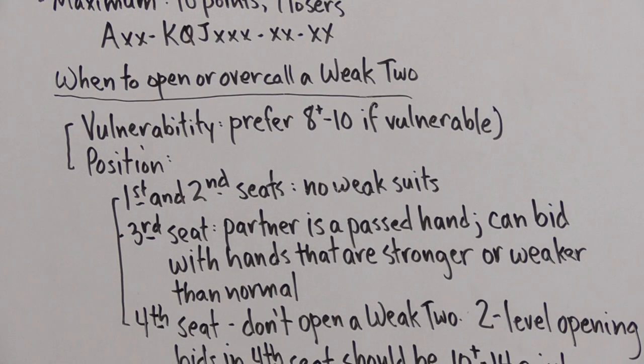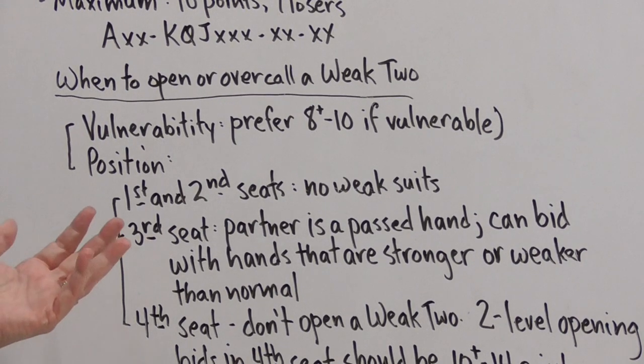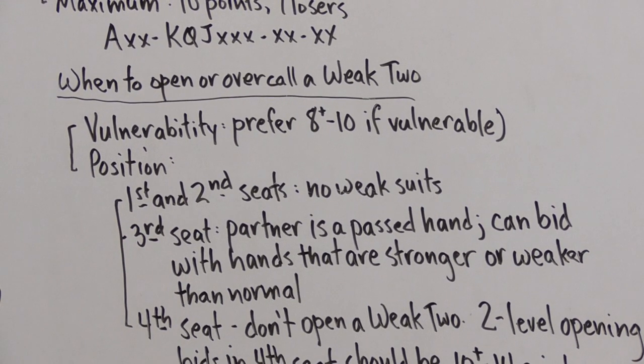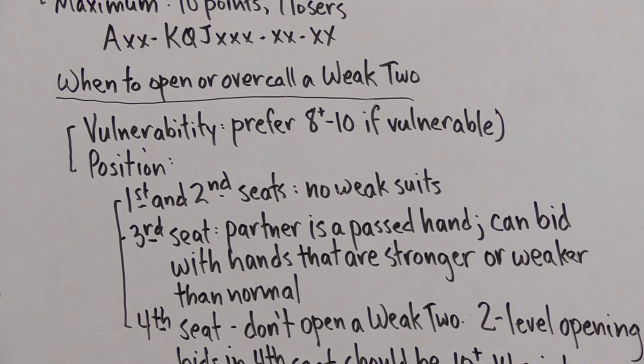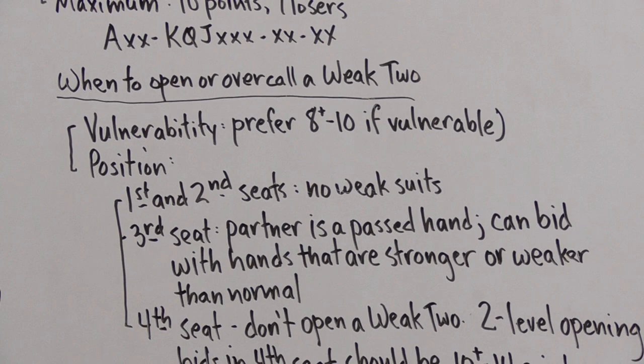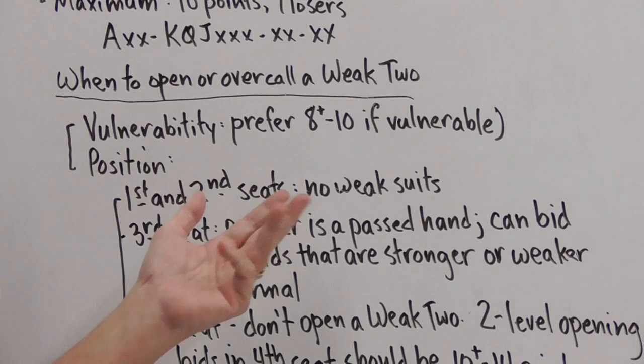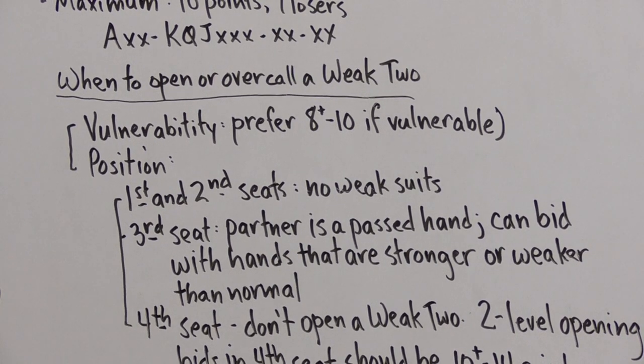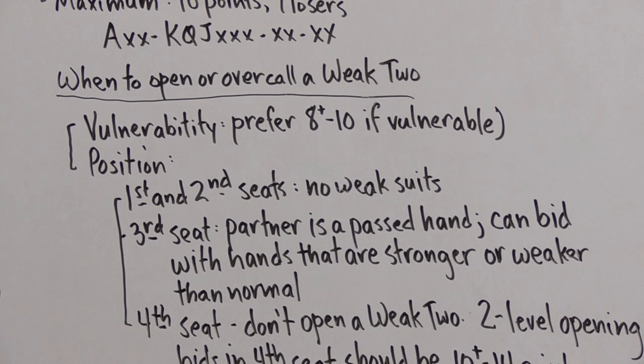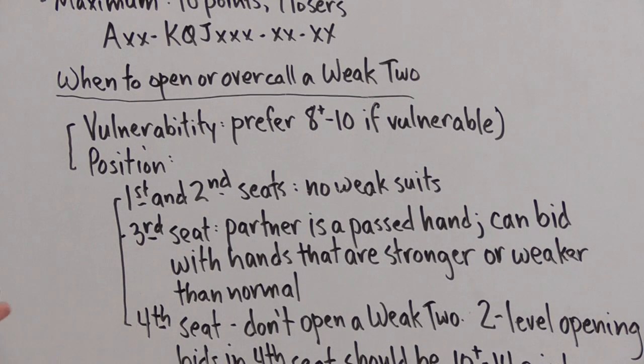Position. If we're in first or second seats we should not open weak twos with weak suits, suits with only two of the top three honors or worse. Personally I prefer that the suit be at least good. I would like to know that partner has two of the top three honors when partner makes a weak two bid in first or second seat, especially if vulnerable.